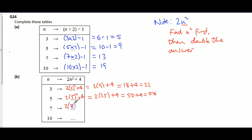2 lots of 7 squared, add on 4, which means we've got to do 2 lots of 49, add 4. Well, I'm going to do this one in my head, 49 makes 98, makes 102.